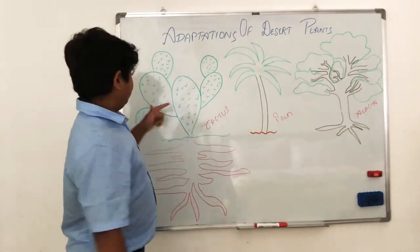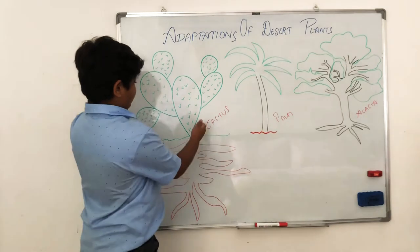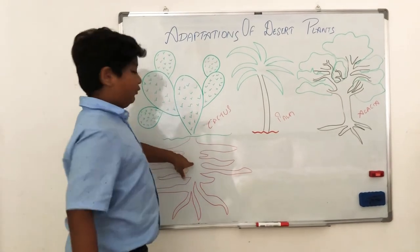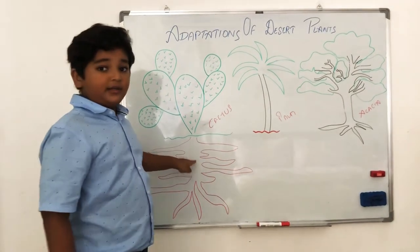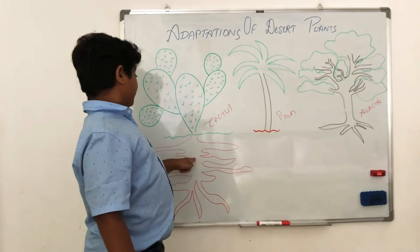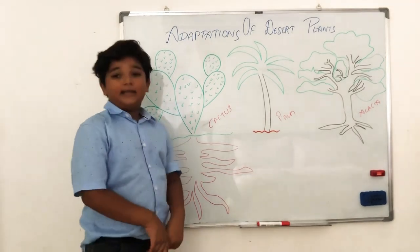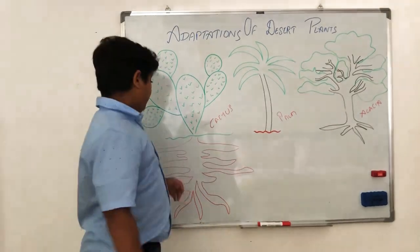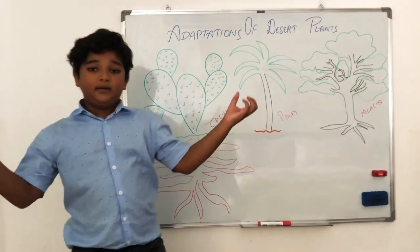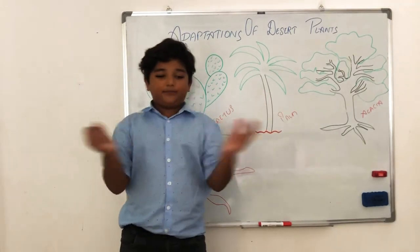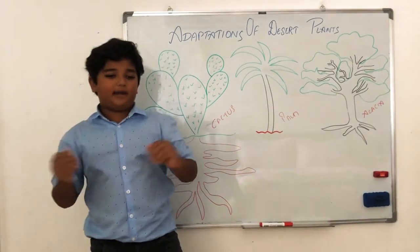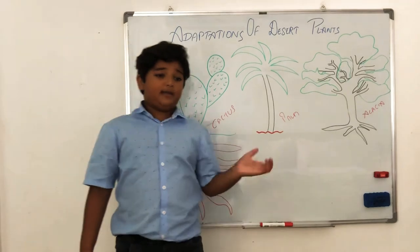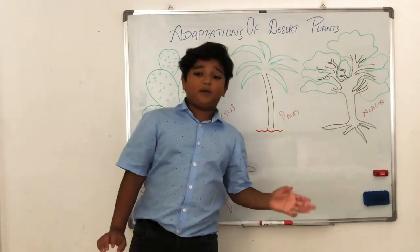Since we are done with the upper part of the cactus, let's look at the roots. The roots of a cactus are deep and very wide, so it can absorb water from everywhere and anywhere — even from a distance.